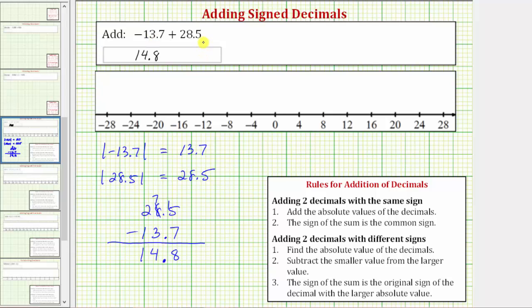Now let's take a look at this sum on the number line. To model negative 13.7 we would start at zero and move left 13.7 units. So negative 13.7 is just left of negative 14.